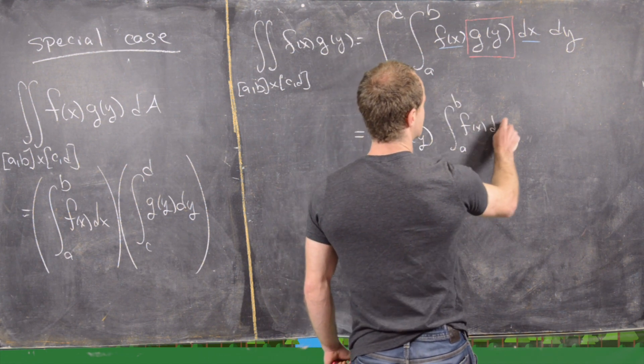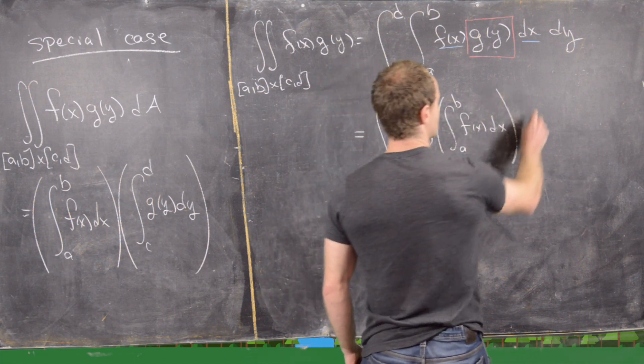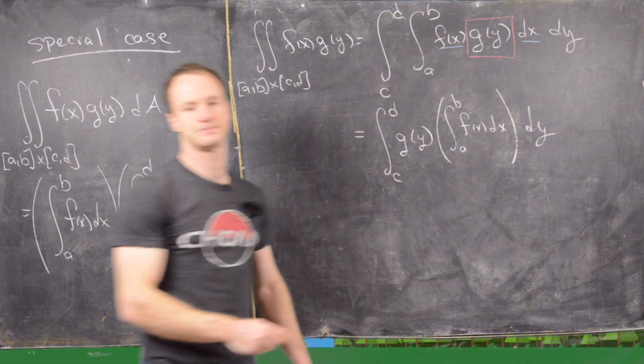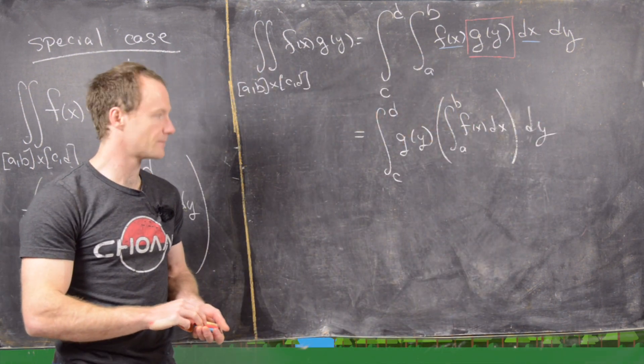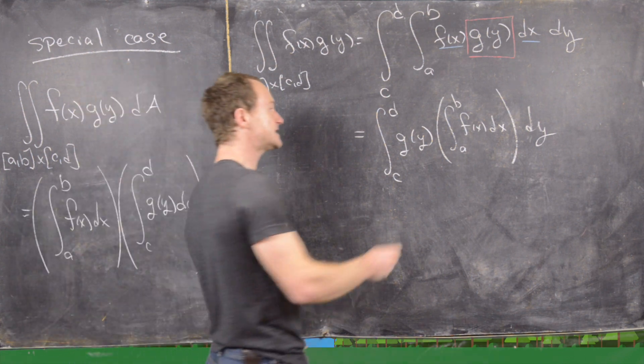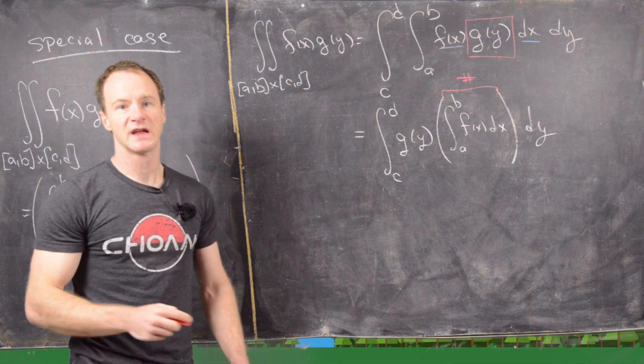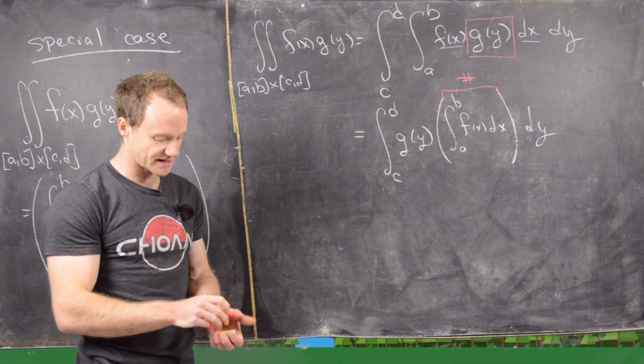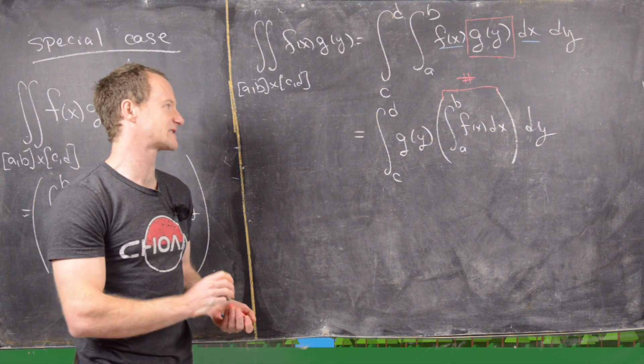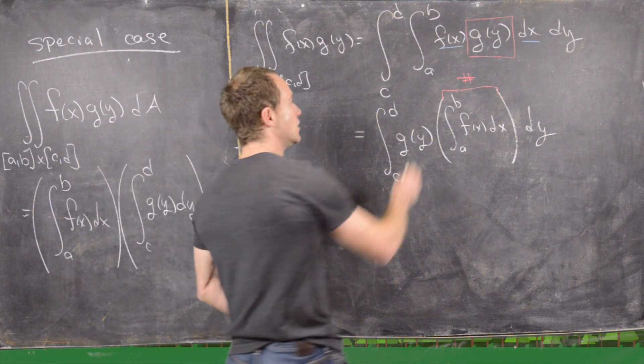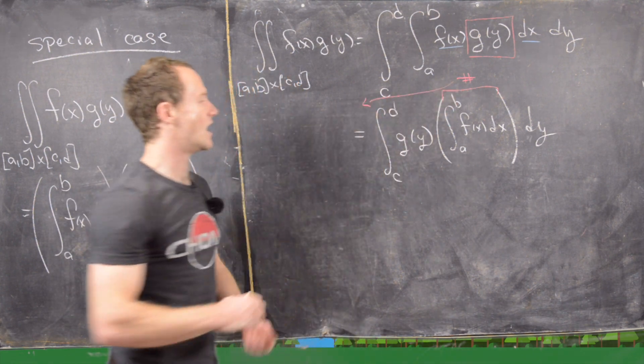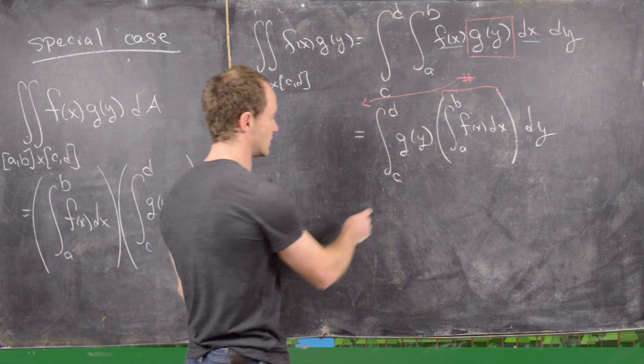But now notice that this thing right here is just a number at this point. It's not even a function of x, it's just a number because we integrate out the x dependence, which means we can factor it out of this y integral.